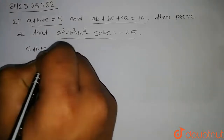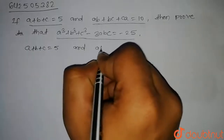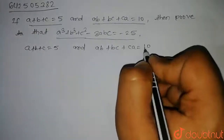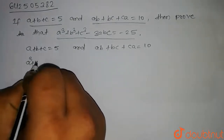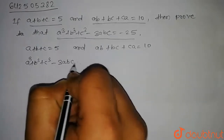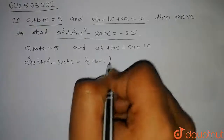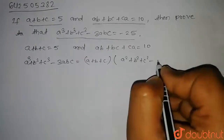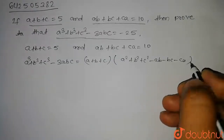So we have given a plus b plus c is equal to 5, and ab plus bc plus ca is equal to 10, and we have to prove this. We know that the formula of a³ plus b³ plus c³ minus 3abc is equal to (a plus b plus c) into (a² plus b² plus c² minus ab minus bc minus ca).